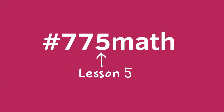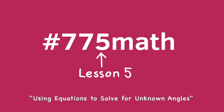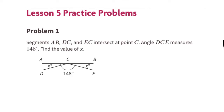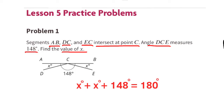7th grade unit 7 lesson 5: using equations to solve for unknown angles — Illustrative Mathematics. Problem number one: segments AB, DC, and EC intersect at point C. Angle DCE measures 148 degrees. Find the value of x. The sum of these three angles will equal 180 degrees, so x plus 148 degrees plus x will equal 180 degrees.